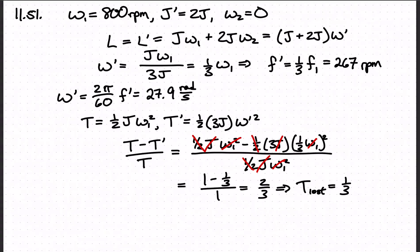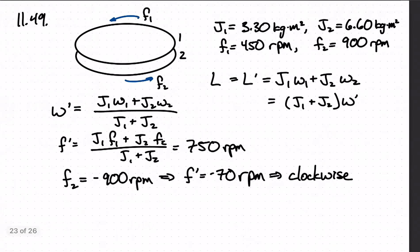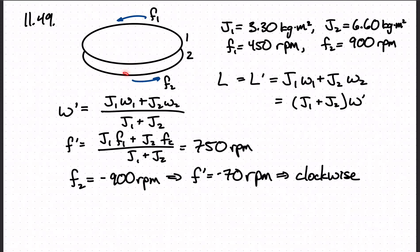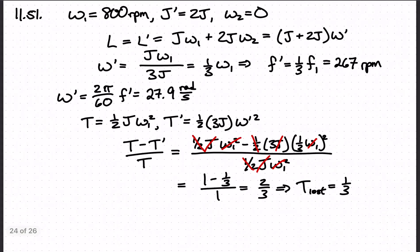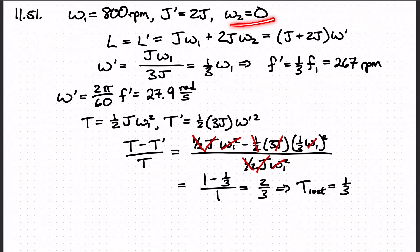We have a wheel rotating freely at an angular speed of 800 revolutions per minute on a shaft whose rotational inertia is negligible. A second wheel, initially at rest, with twice the rotational inertia of the first, is suddenly coupled to the shaft. So we have two disks — one rotating, one at rest — and then we basically clamp the second one to the shaft so things suddenly change. The second disk has a rotational inertia of twice the first and initially an angular velocity of zero.